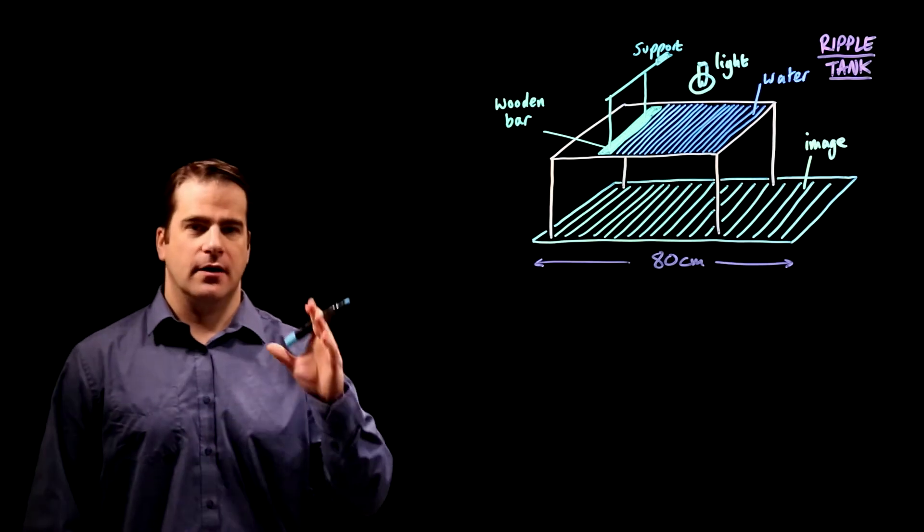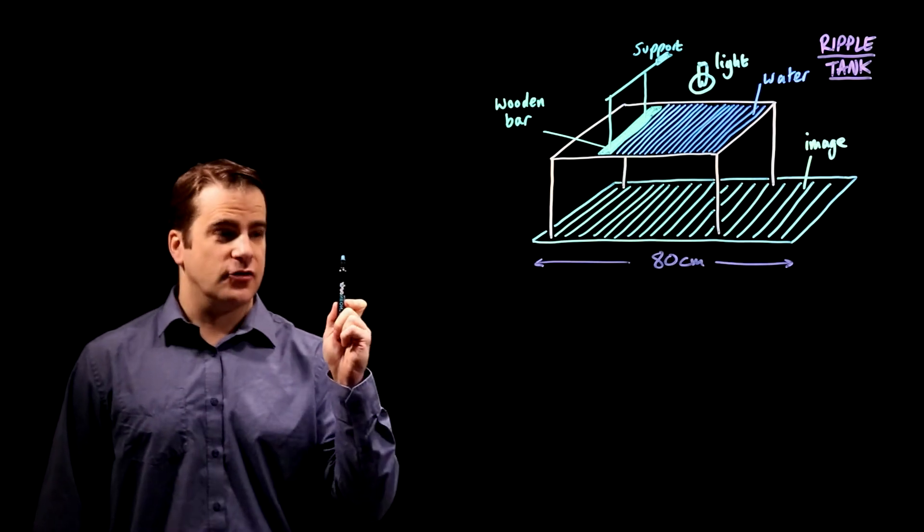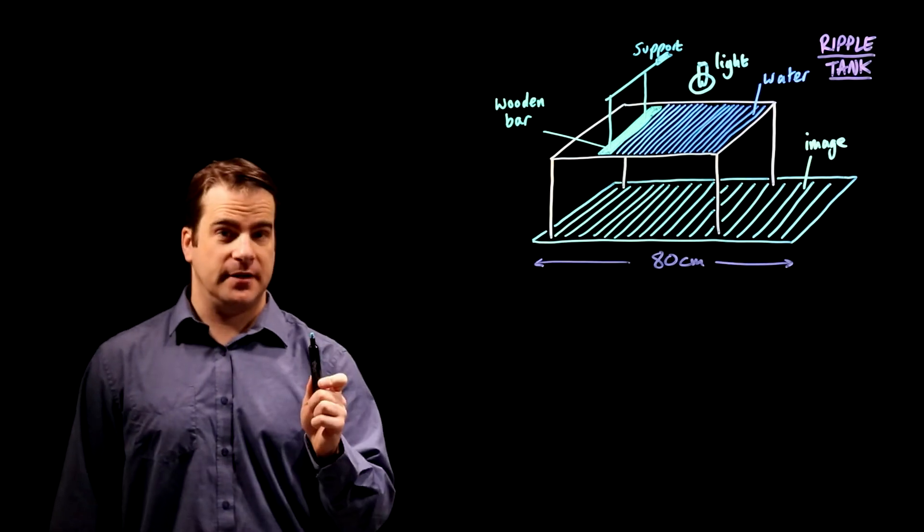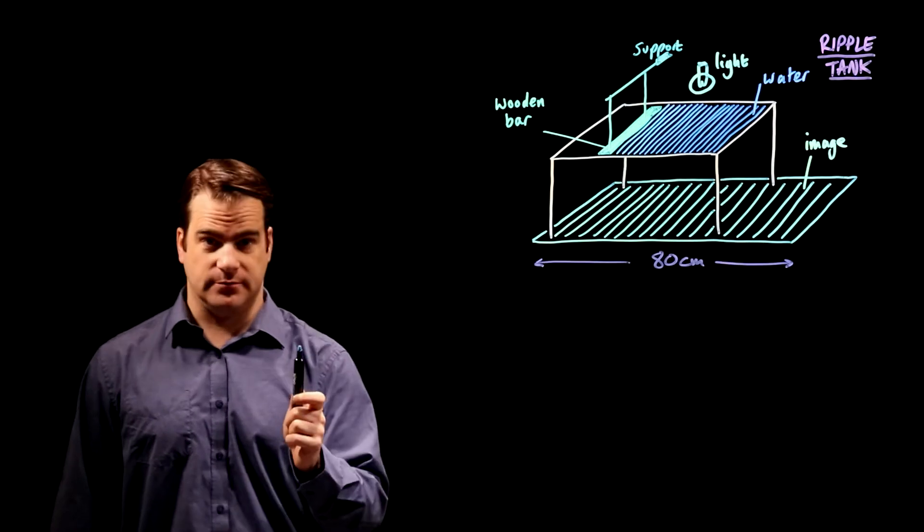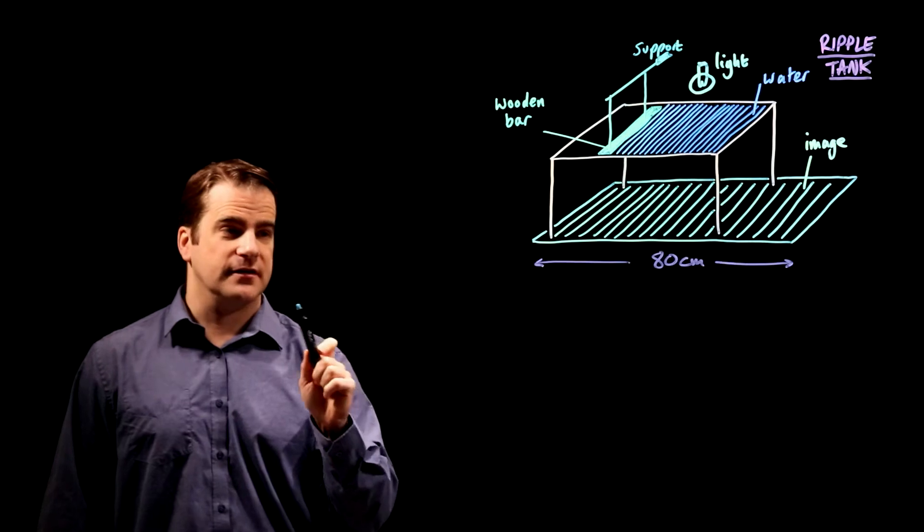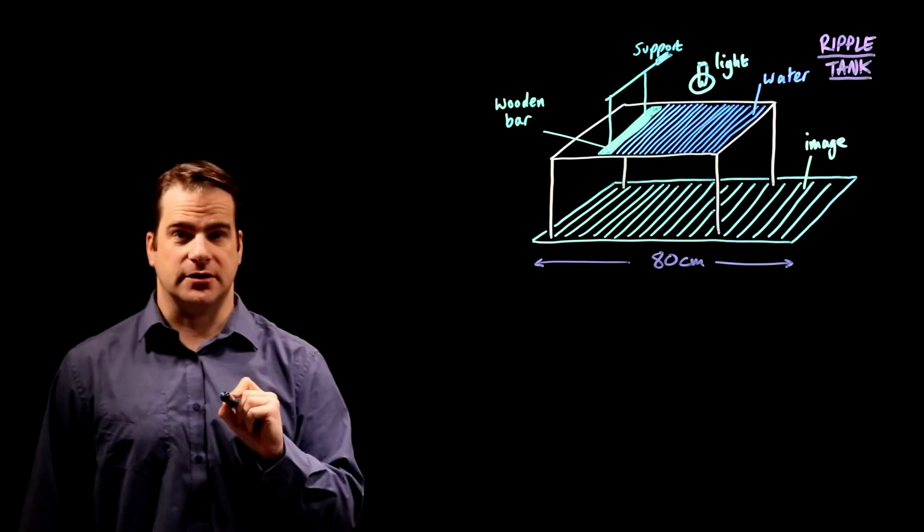A transverse wave, the critical feature is that the oscillations are perpendicular to the direction of travel. And a longitudinal wave, the oscillations are parallel to the direction of travel.